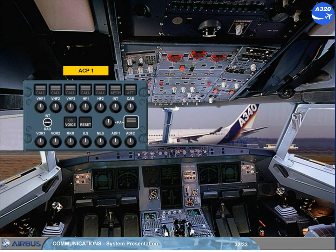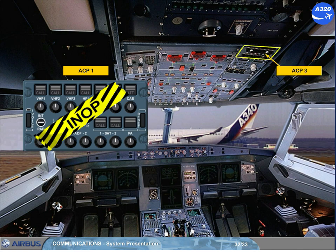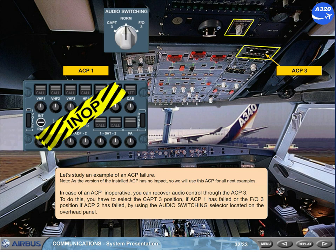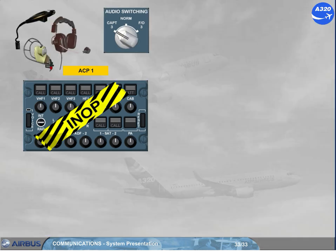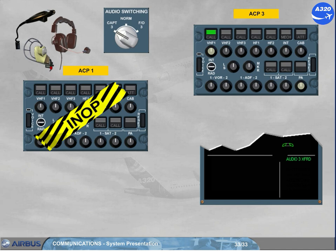Let's study an example of an ACP failure. Note: as the version of the installed ACP has no impact, we will use this ACP for all next examples. In case of an ACP inoperative, you can recover audio control through ACP 3. To do this, you have to select the captain 3 position if ACP 1 has failed, or the first officer 3 position if ACP 2 has failed, by using the audio switching selector located on the overhead panel. This selection allows the captain to use his acoustic equipment with the selection he will do on ACP 3. Note: an audio 3 transferred memo appears to indicate that an audio switching selection has been made.